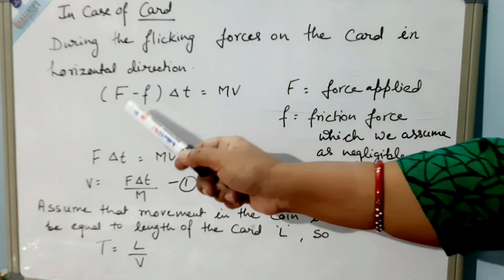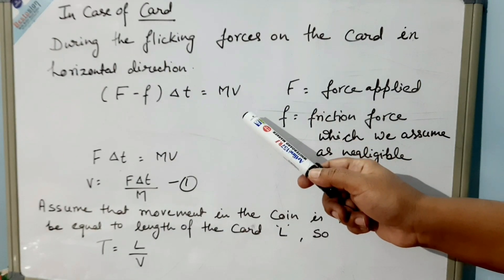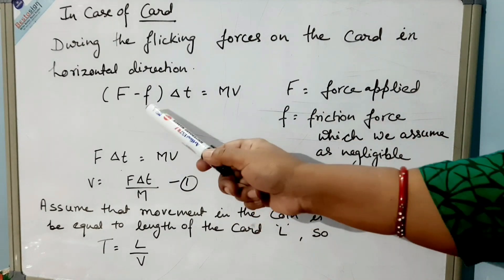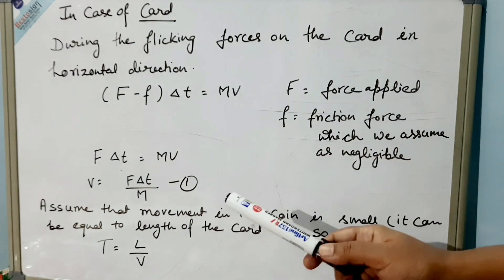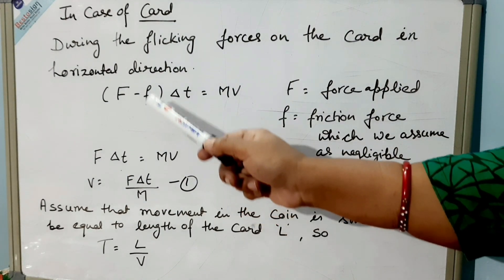So we can write the equation like this: (F - f)Δt = MV. This F is the force applied, small f is the force between the card and the tumbler, that is a frictional force which we have assumed as negligible.